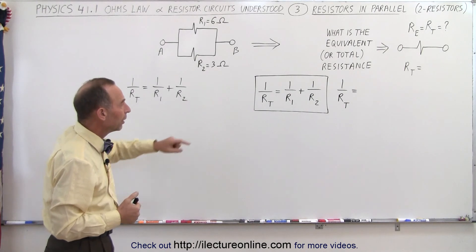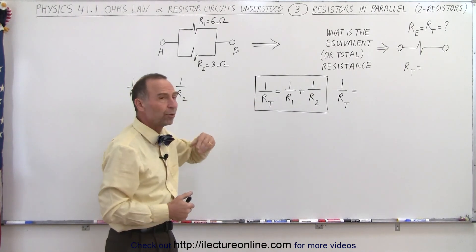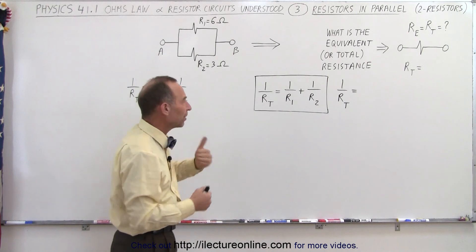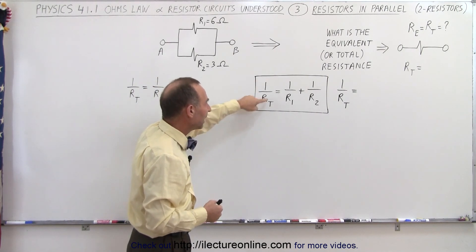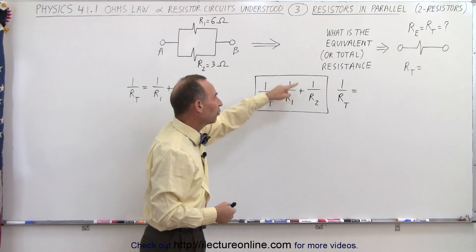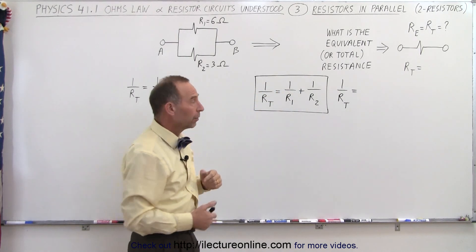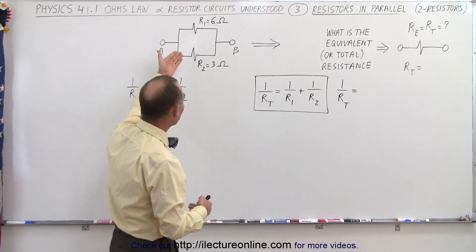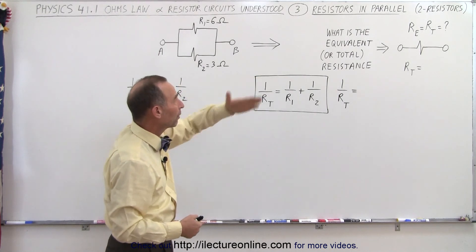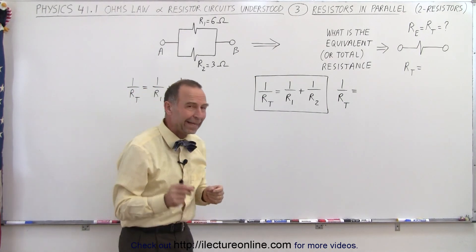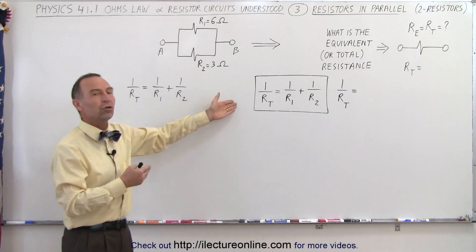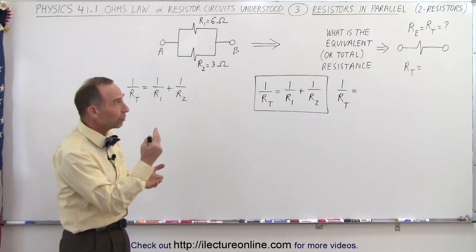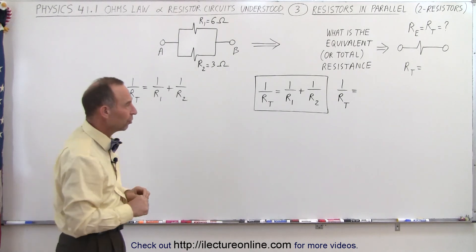When there's two of them in parallel, to find the total resistance we use the inverse proportionality. In other words, we say that 1 over the resistance total is equal to 1 over R1 plus 1 over R2. So let's go ahead and use this example right here to find the total or equivalent resistance of this case. And then we'll find an equivalent equation which is a little bit easier to use, more practical to use when there's two resistors.